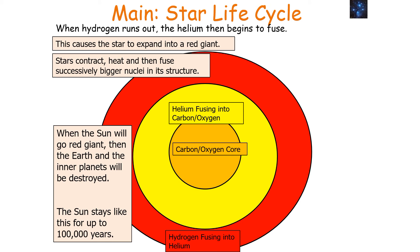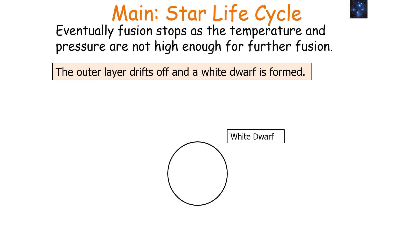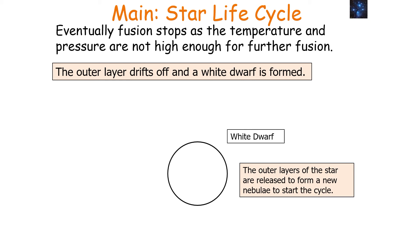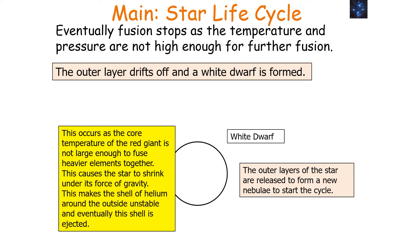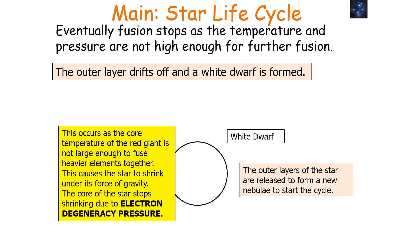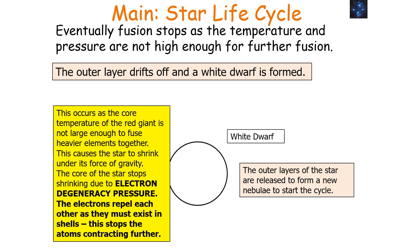When the Sun goes red giant, the Earth and the inner planets will be destroyed by the increase in mass, and the Sun will stay in this state for up to a hundred thousand years. When fusion stops, the temperature and pressure decrease, and the outer layers drift off while a white dwarf is formed. The outer layers of the star are released to form a new nebula, starting the cycle again. This occurs as the core temperature of the red giant is not large enough to fuse heavier elements. The core stops shrinking and contracting due to electron degeneracy pressure — when electrons repel each other as they must exist in shells, stopping the atoms contracting further.